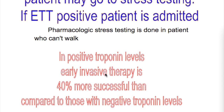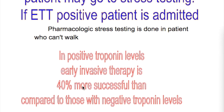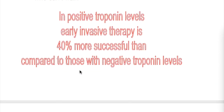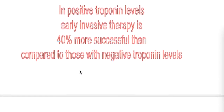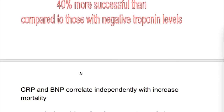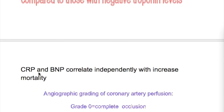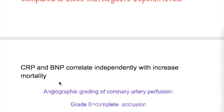What is the result of invasive therapy in troponin-positive versus troponin-negative patients? In troponin-positive patients, early invasive therapy is 40% more successful compared to those with negative troponin levels. Other tests — CRP and BNP natriuretic peptides — also correlate independently with increased mortality.